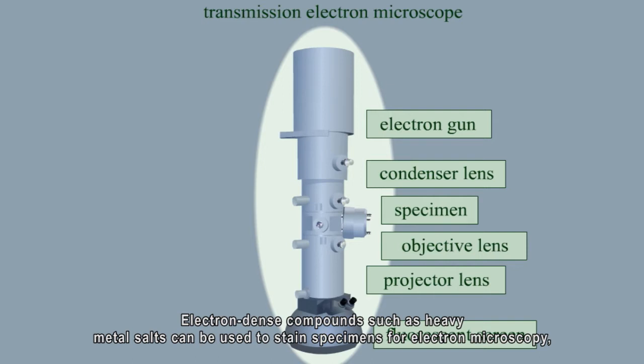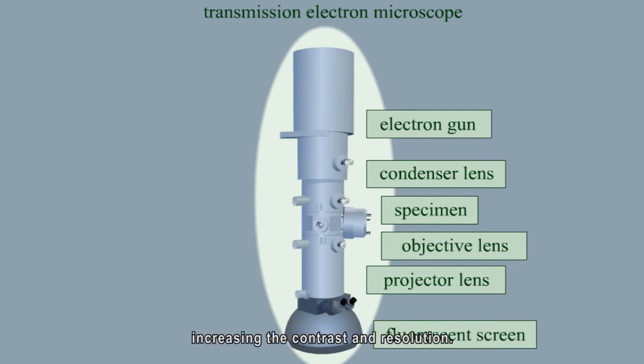Electron-dense compounds, such as heavy metal salts, can be used to stain specimens for electron microscopy, increasing the contrast and resolution.